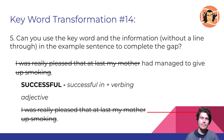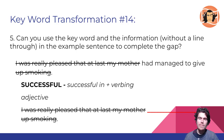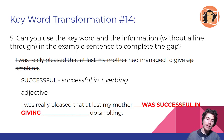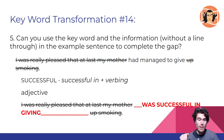Step 5: we need to try to complete the sentence now using the information without a line through in the example sentence and the keyword 'successful.' I've written 'was successful in giving' — using 'successful in' followed by a verb in -ing form, and I've also added the word 'was.' Don't worry if you've written something different; you can continue the next steps with my words or your own.